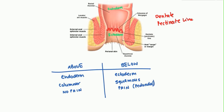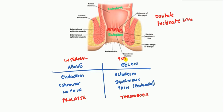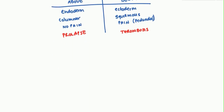With regard to hemorrhoid pathology, one key feature is that hemorrhoids above the pectinate line oftentimes result in prolapse, whereas hemorrhoids below the pectinate line result in thrombosis. Hemorrhoids above the pectinate line are also known as internal hemorrhoids, and below the pectinate line they are called external hemorrhoids.